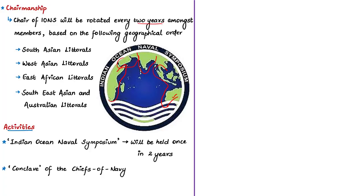When IONS came into existence, the Indian Navy was chair from 2008 to 2010, representing South Asia. Then the United Arab Emirates from West Asia was chair from 2010 to 2012. South Africa representing the East African littoral was chair from 2012 to 2014. And Australia was chair from 2014 to 2016 since it comes under the Southeast Asian and Australian littoral. This is how the chairmanship is rotated among these four geographical regions.